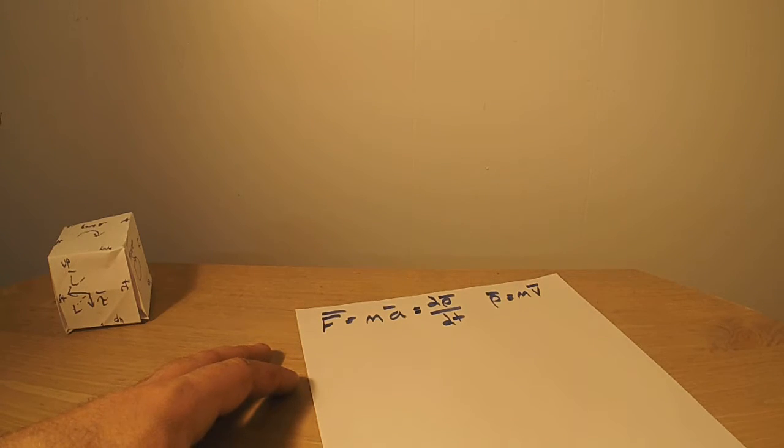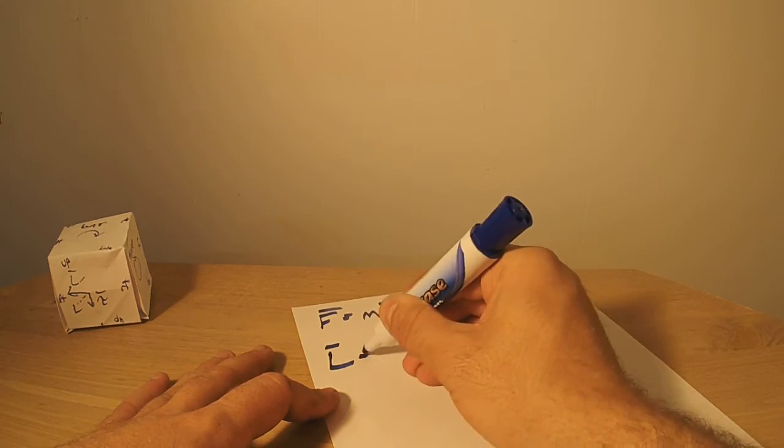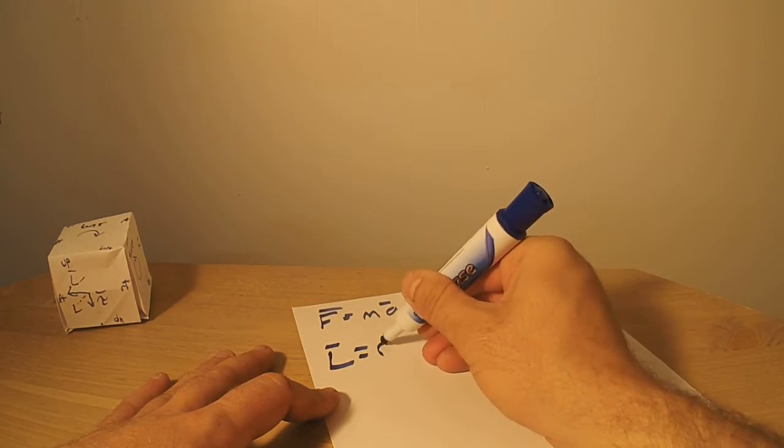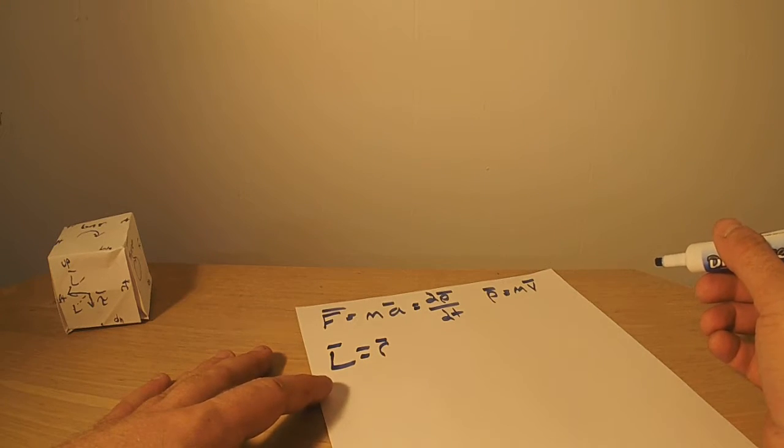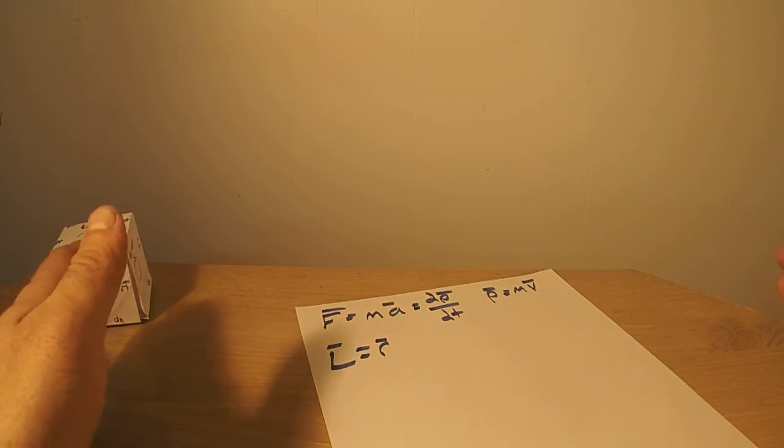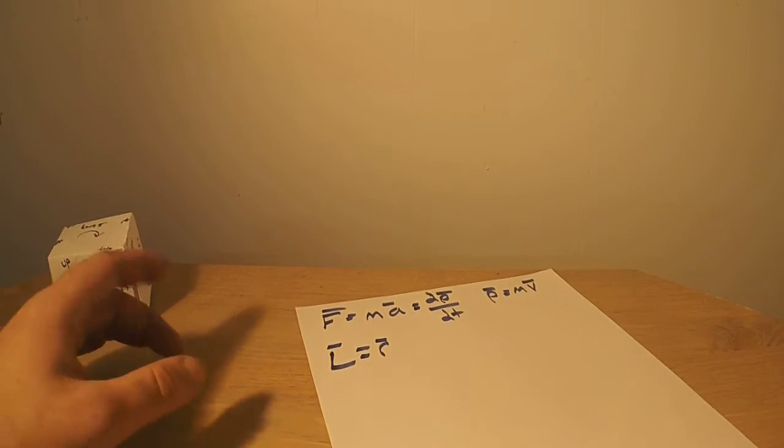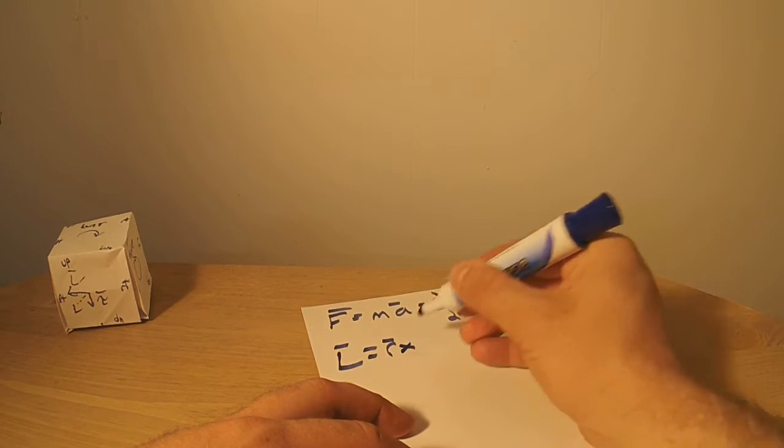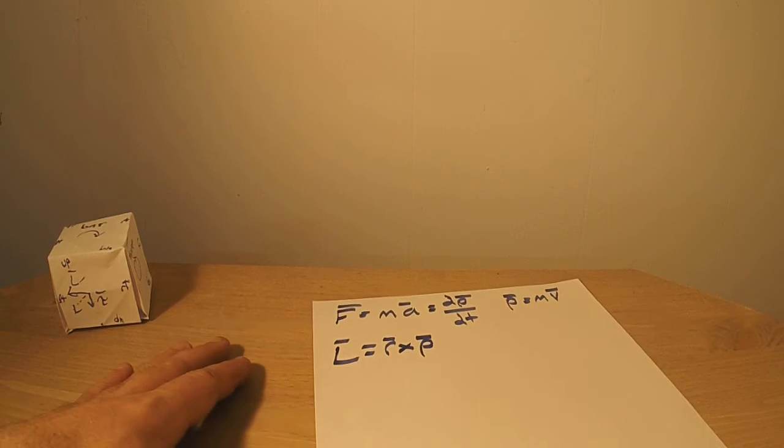Now getting into rotational kinematics, we have angular momentum. Angular momentum is your displacement vector—that's a vector pointing straight out from the center of your system, and it's the magnitude of the distance from that center—the cross product of your linear momentum.